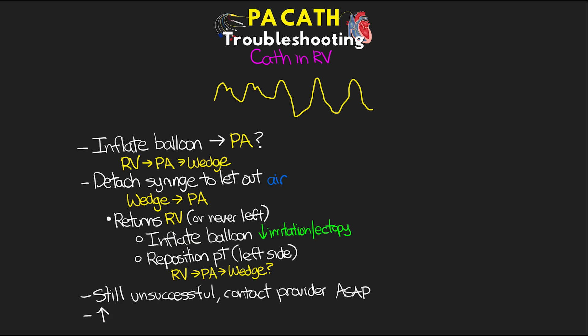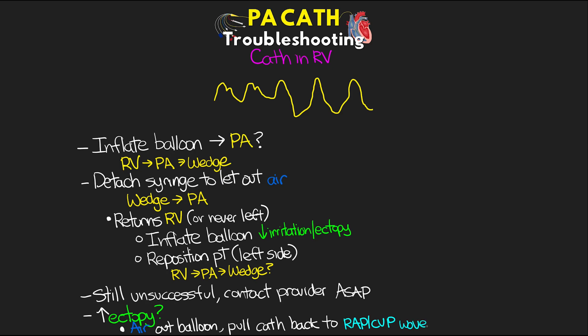If you are having lots of ectopy, ensure that the air is out of the balloon, and then pull back the pulmonary artery catheter until we have that right atrial pressure or CVP waveform, and then await the provider to potentially come and refloat it.